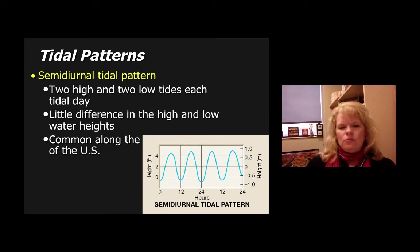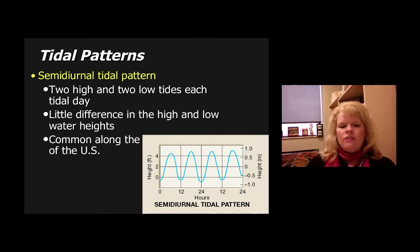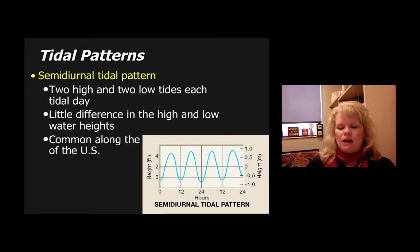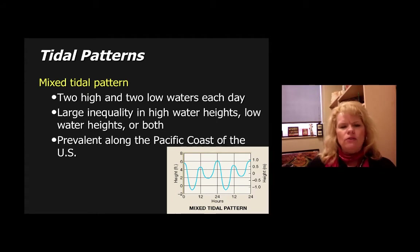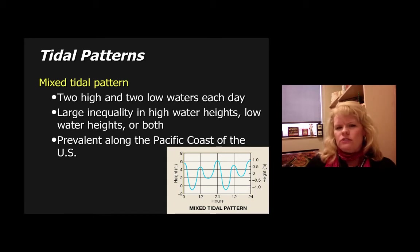Semidiurnal tidal patterns, with two highs and two low tides each day, show little difference between the high and low tide water heights. These are common along the shorelines of the United States. Mixed tidal patterns usually show a very unusual difference between high water heights and low water heights. The place you can see this most distinctively is along the Pacific coastline of the United States and in Alaska.